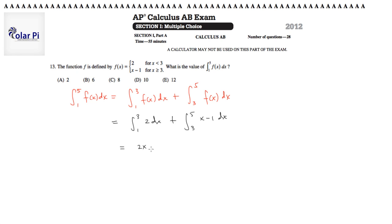This is just 2x evaluated at 1 and 3, and then the rest of it is the integral of that evaluated at 3 and 5. So that's x squared over 2 minus x evaluated at 3 and 5.